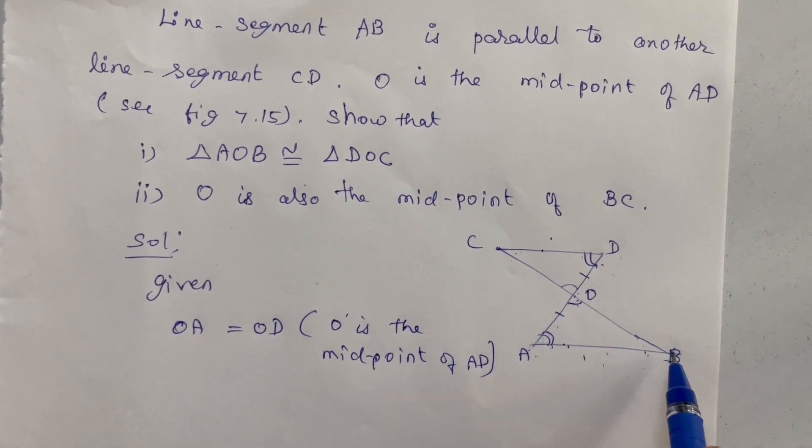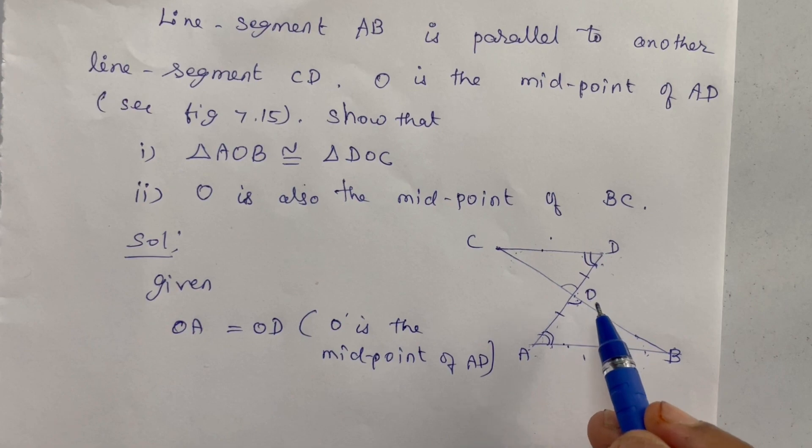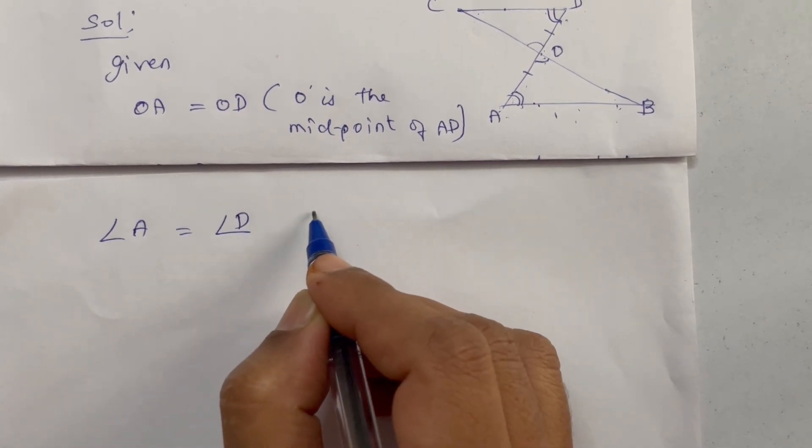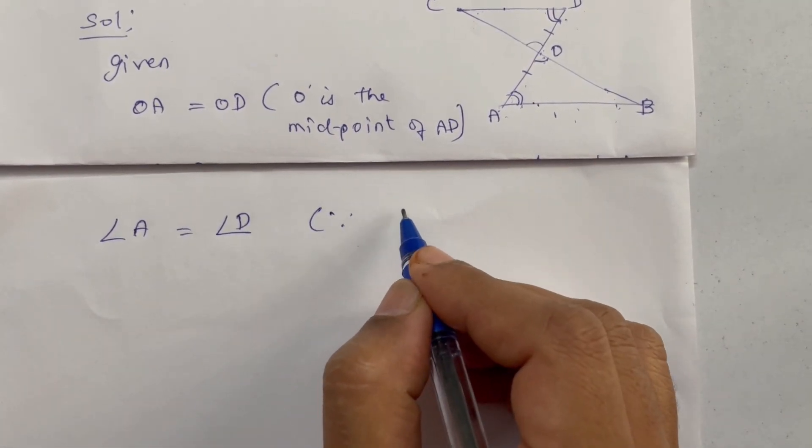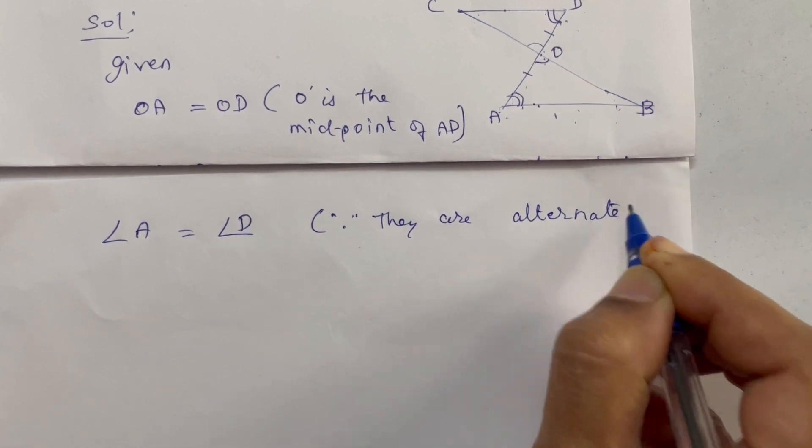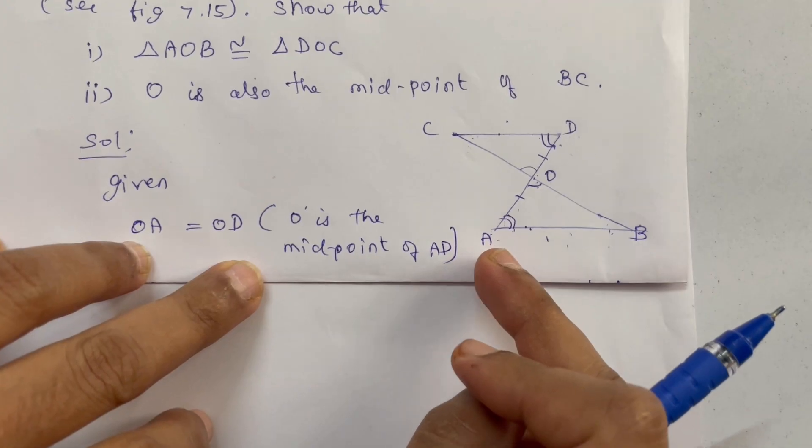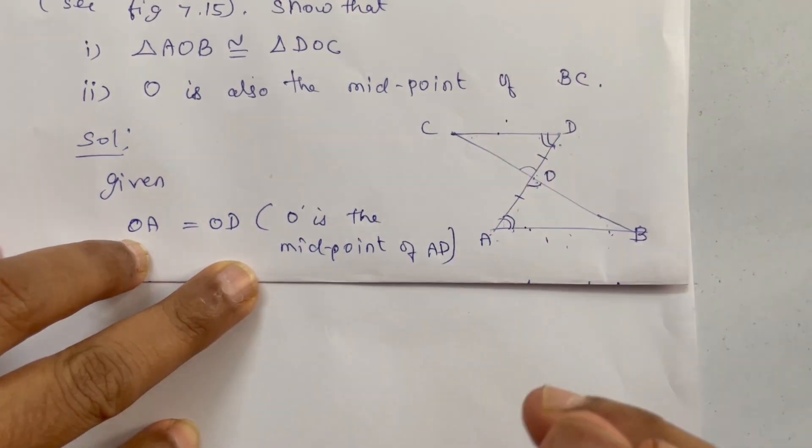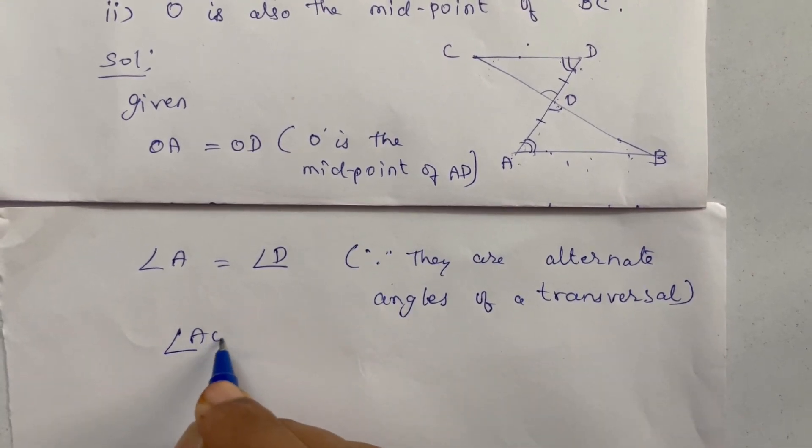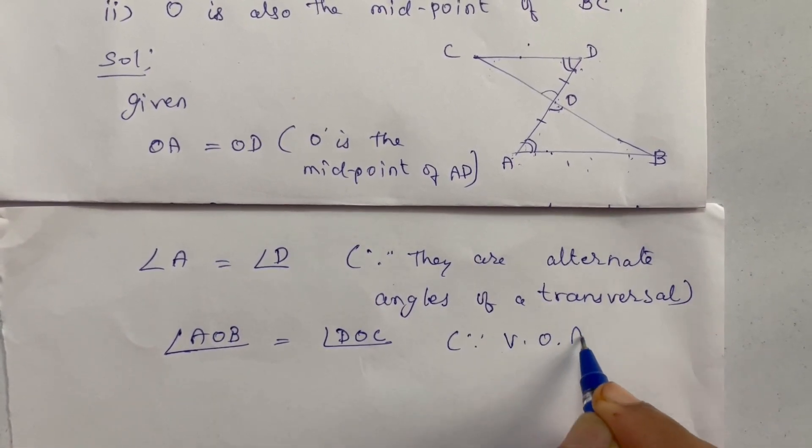Angle AOB and angle DOC are vertically opposite angles. They are equal. Angle A equal to angle D. Reason: they are alternate angles of a transversal. Angle AOB equal to angle DOC. Because these two are vertically opposite angles.